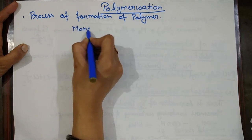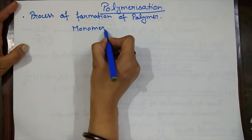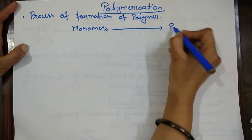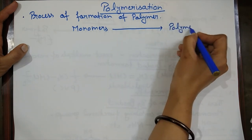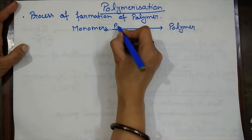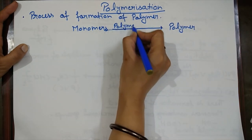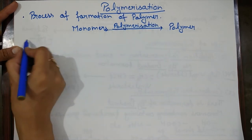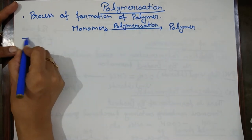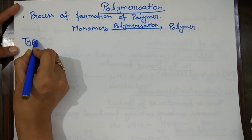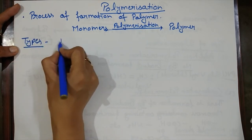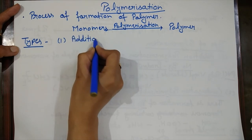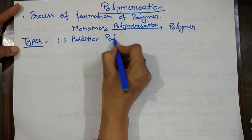So how can we represent polymerization? If we have monomers present, these monomers are converted through the process of polymerization. Now we have to divide polymerization into two categories. First is addition polymerization, and second is condensation polymerization.